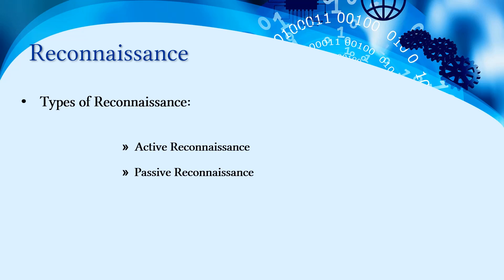Reconnaissance has two types: active reconnaissance and passive reconnaissance. In active reconnaissance, we interact with the target directly to collect information. In passive reconnaissance, we do not interact with the target directly — instead, we collect information through other indirect means.